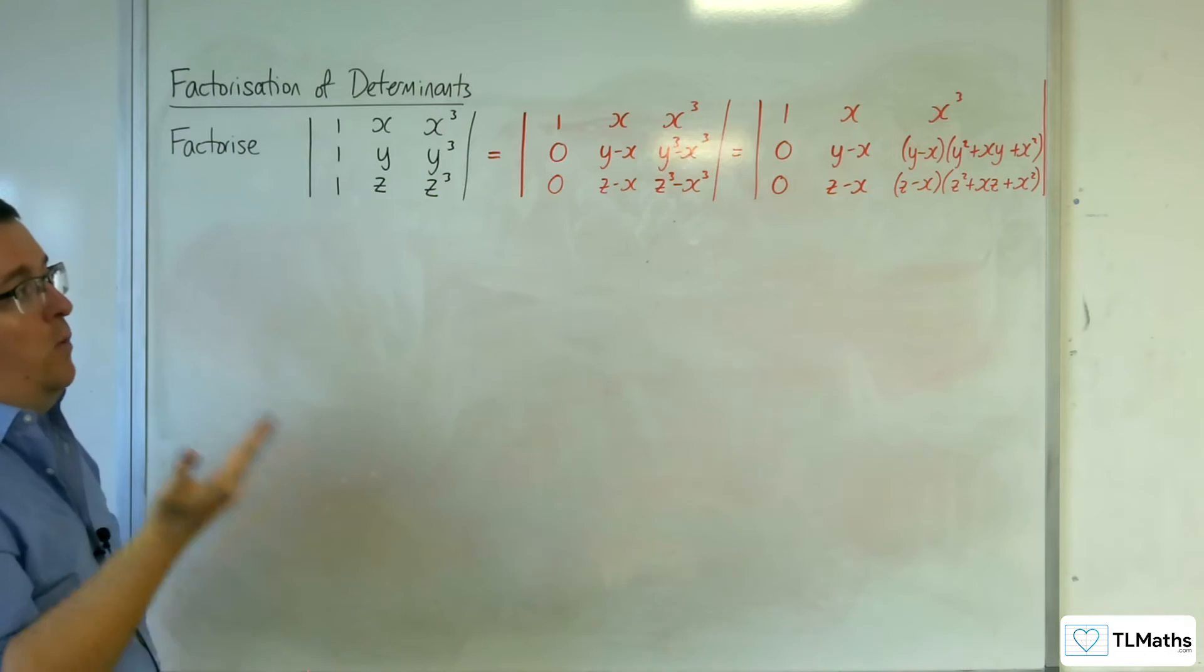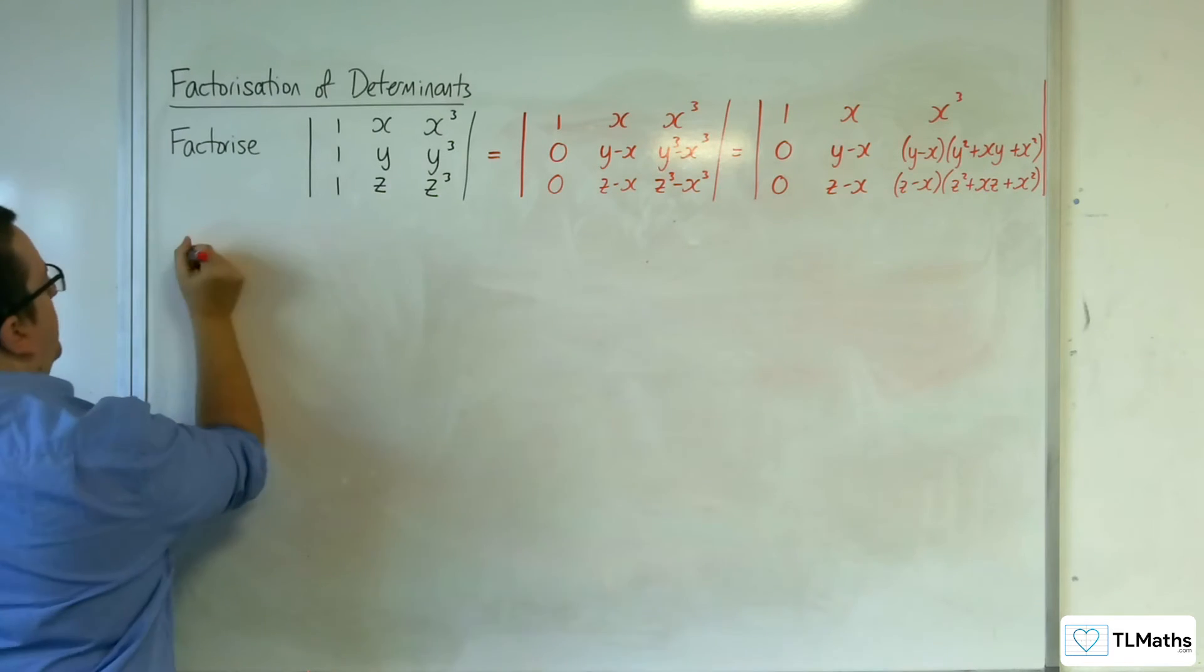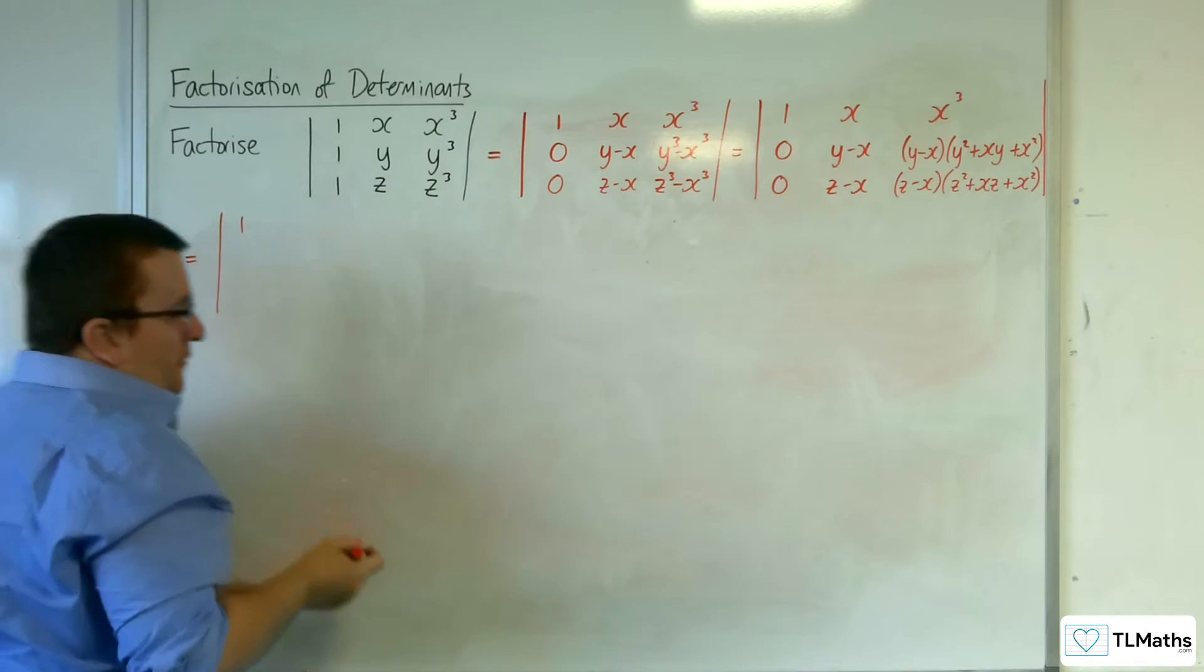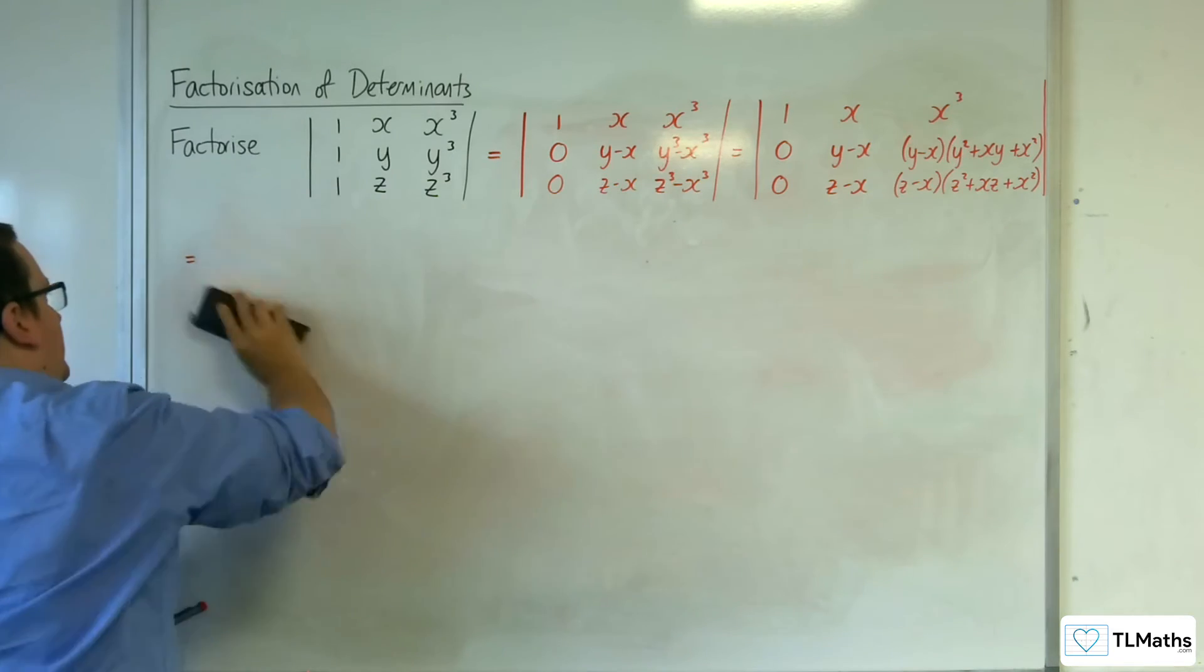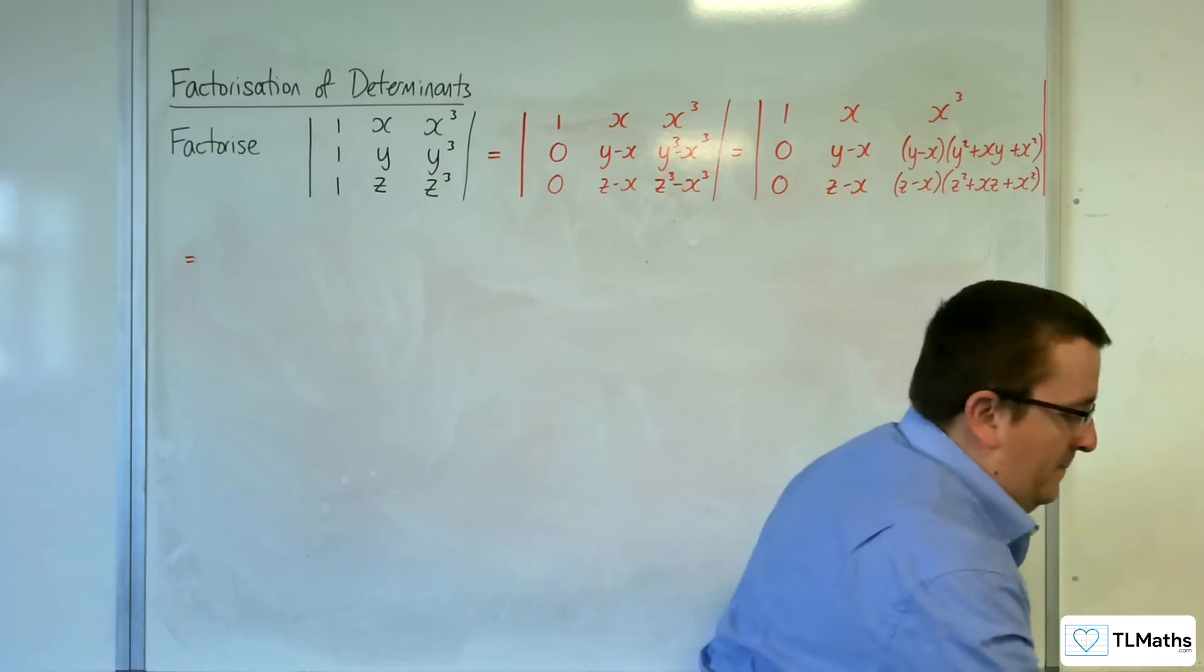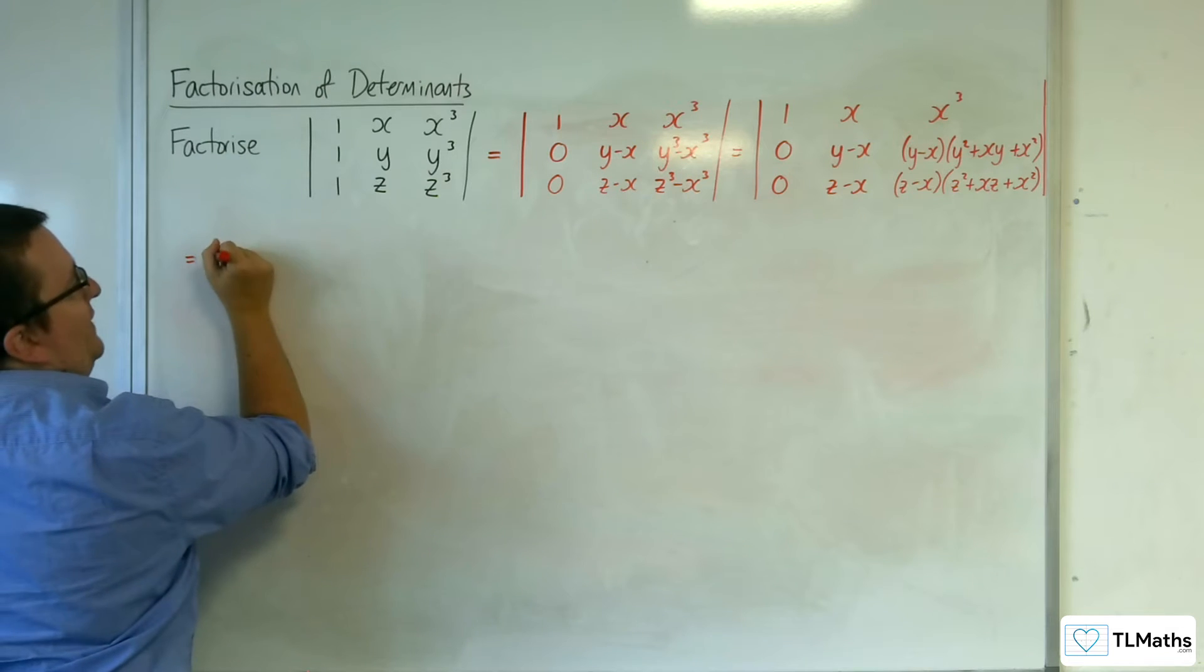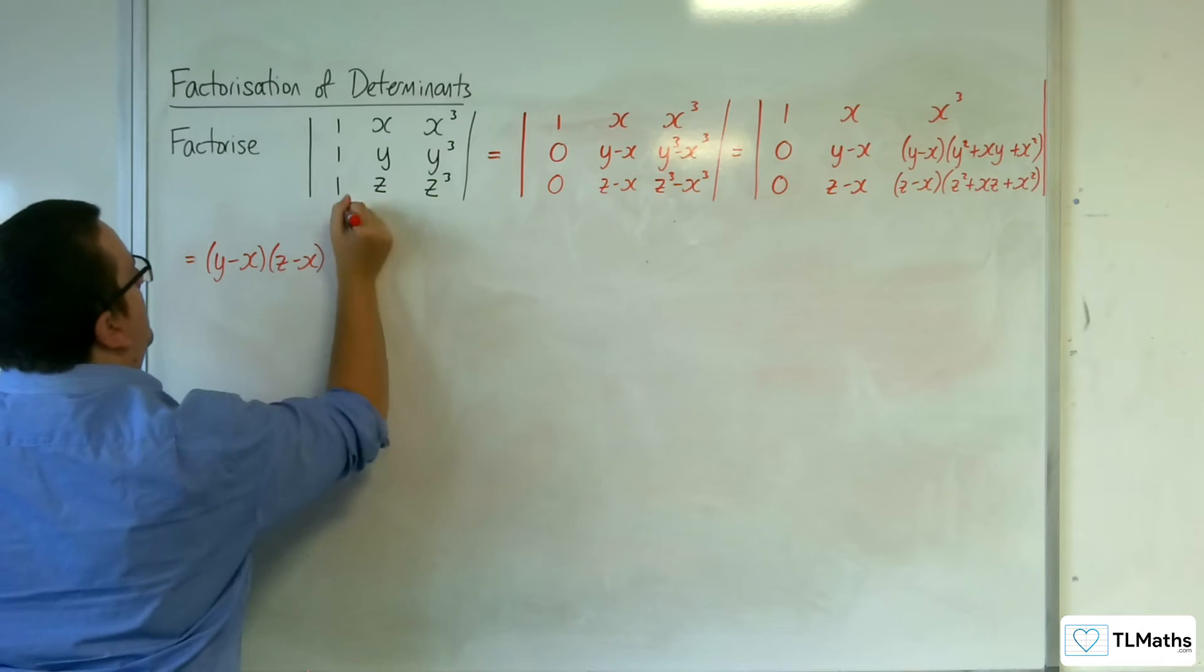So, now I can factor out y take away x and z take away x. So, that's what I'm going to do. Let's try that again. Do what you say. So, y take away x and the z take away x.